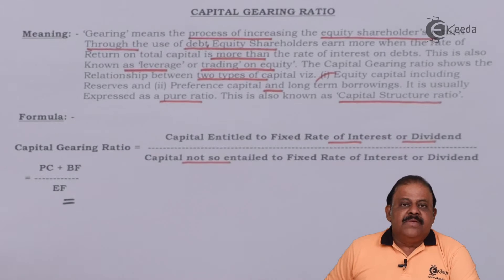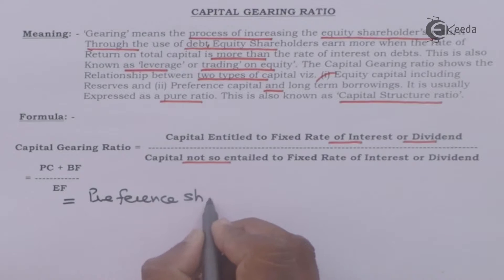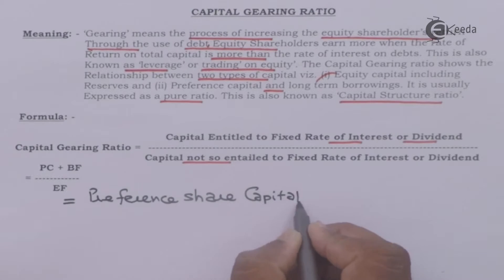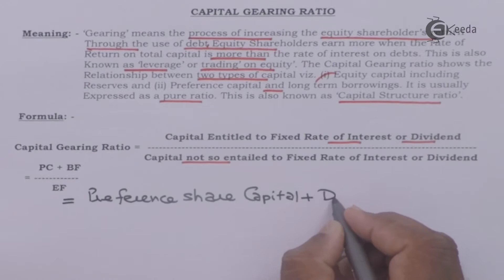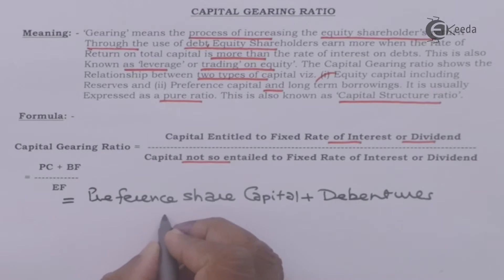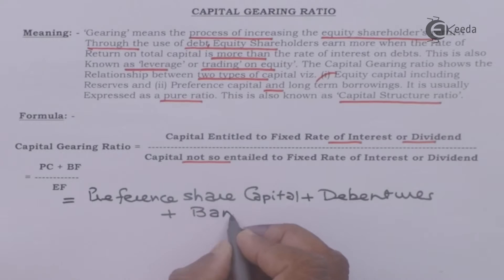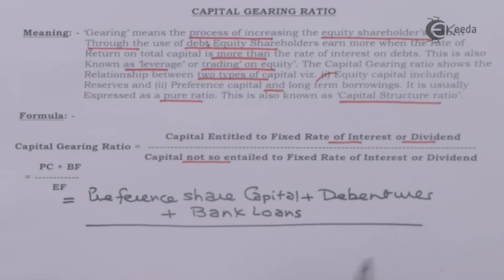Capital entitled to fixed rate of interest or dividend includes: preference share capital, on which companies are required to pay a fixed rate of dividend; plus debentures, on which the company is required to pay a fixed rate of interest; plus bank loans and term loans given by banks, on which a fixed rate of interest is payable.